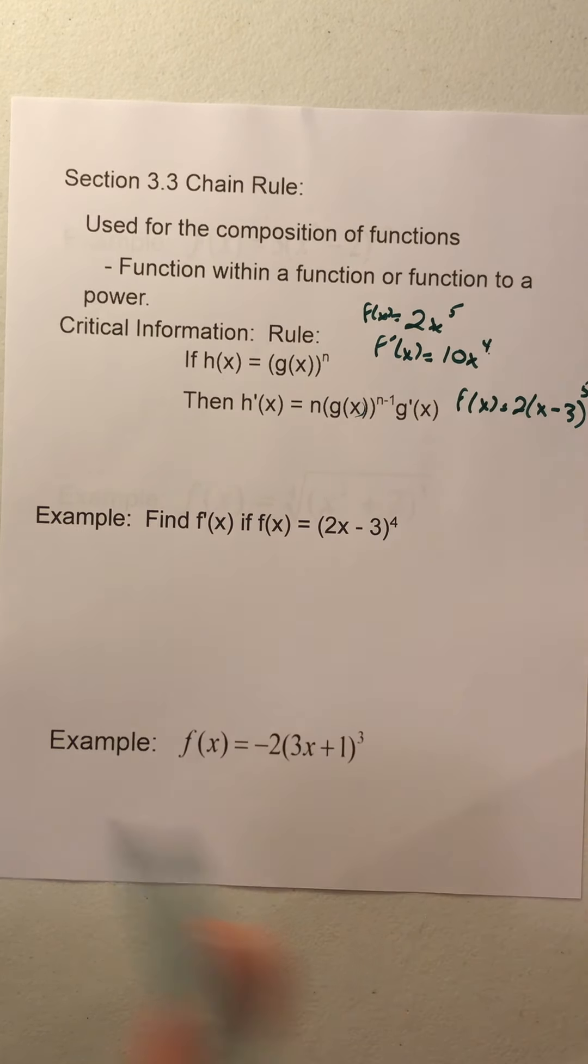The only thing we can really do at this point is to multiply these numbers, constants, 4 times 2, those two constants together to get 8 times 2x minus 3 to the third.